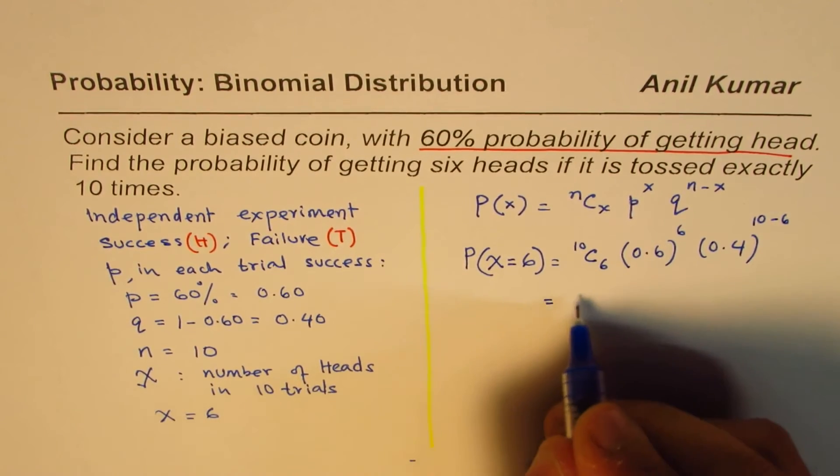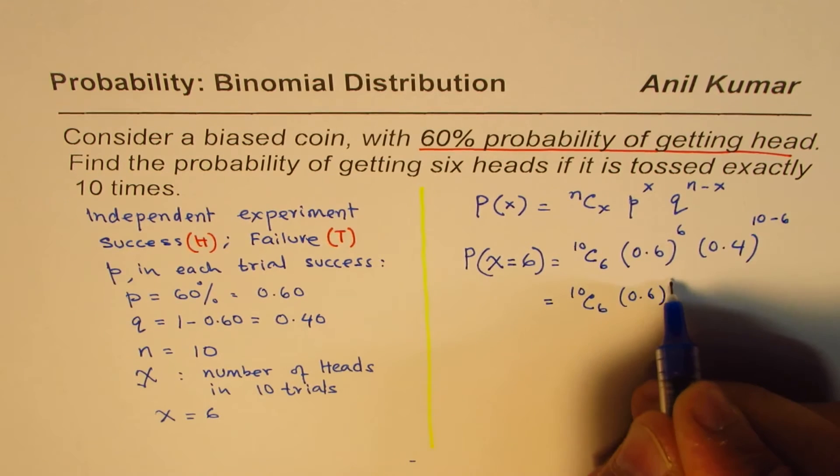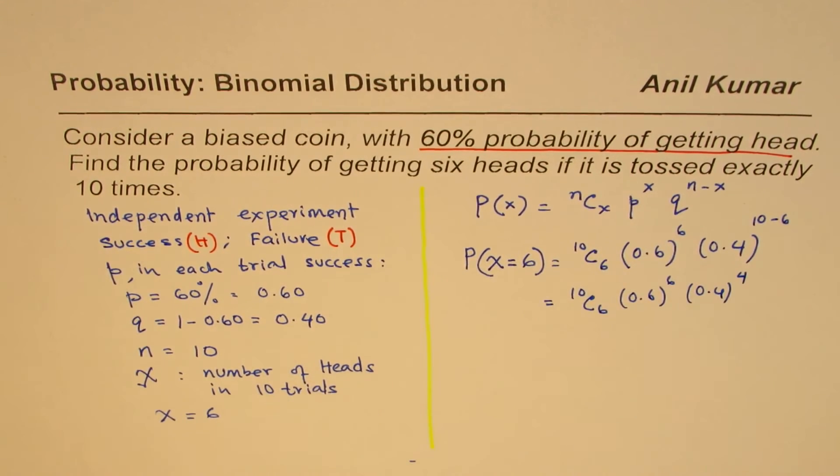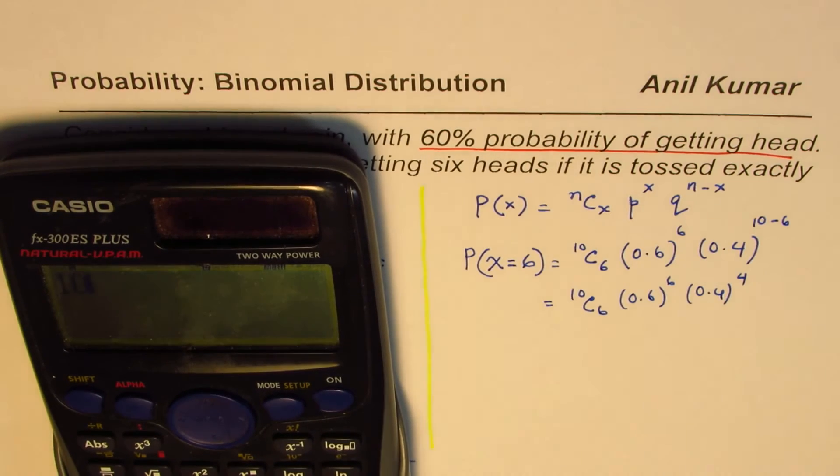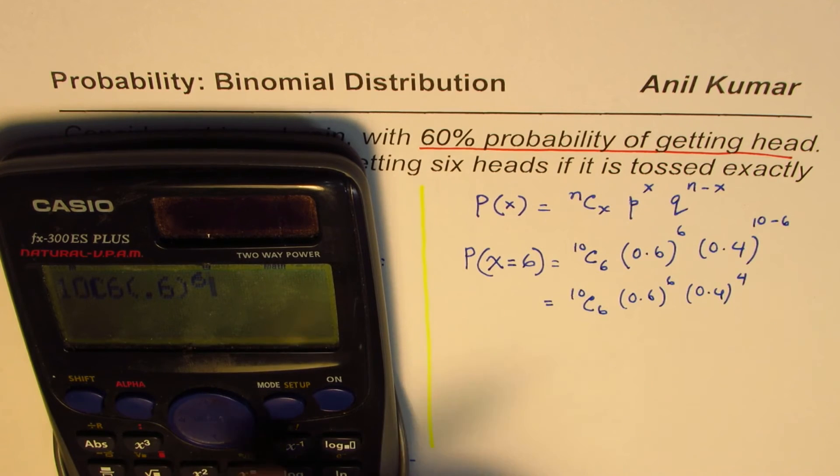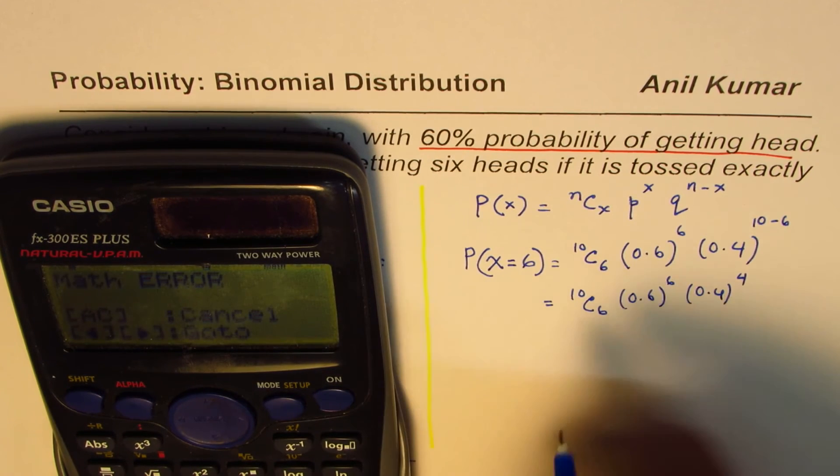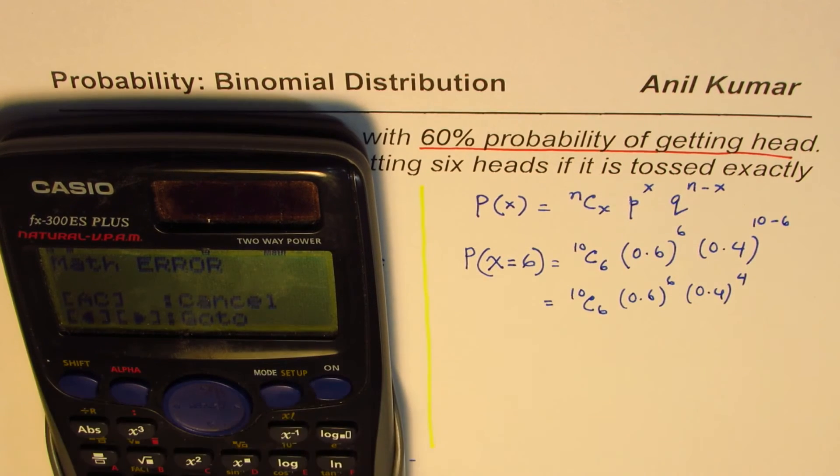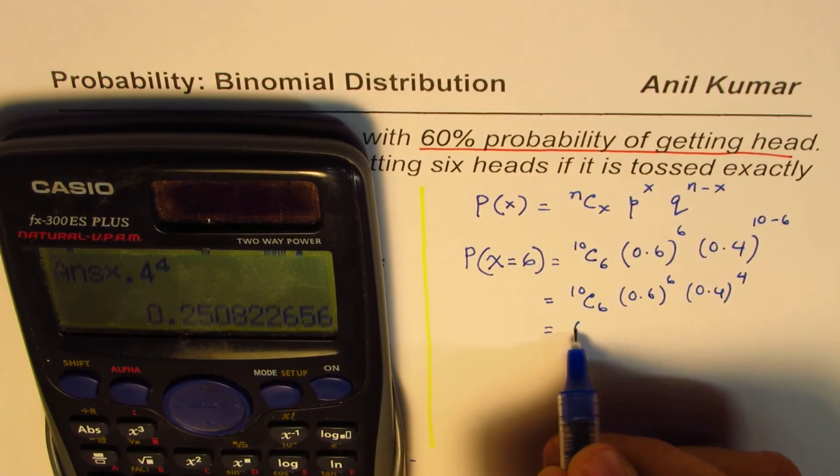So that is how you can calculate: 10C6, 0.6 to the power of 6, and 0.4 to the power of 4. We can use the calculator to find the answer. So 10C6 equals to something, and that gets multiplied by 0.6 to the power of 6 times 0.4 to the power of 4, which is equal to 0.25.